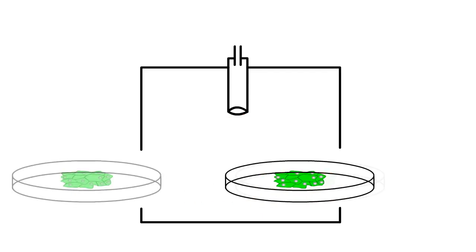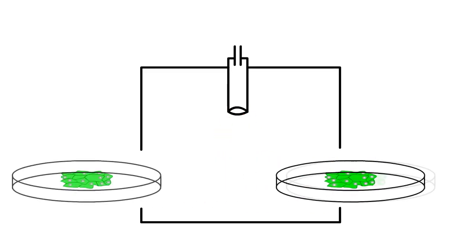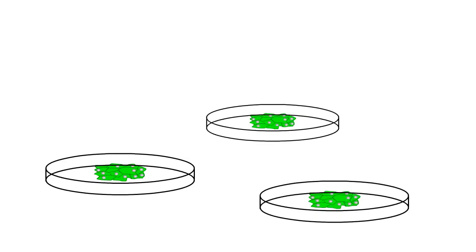Both agrobacterium and gene gun-mediated gene delivery is done in plant tissue culture, little clumps of plant cells that later on differentiate and grow into actual plants.